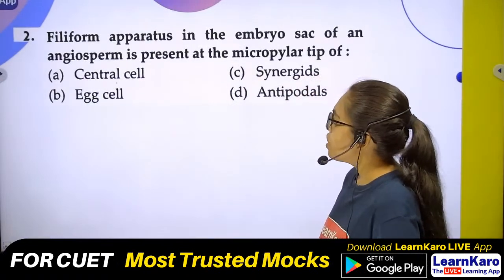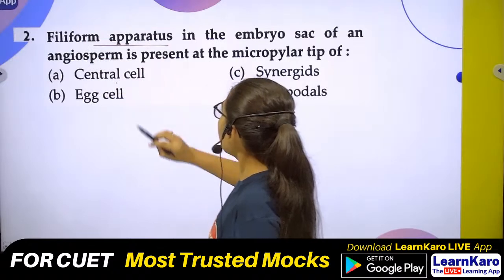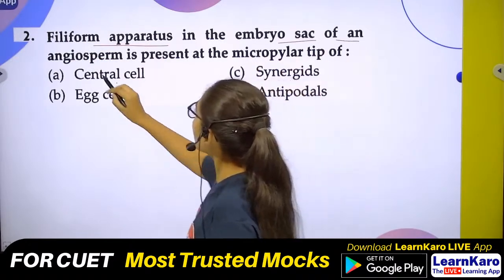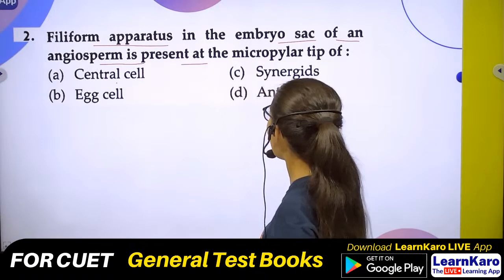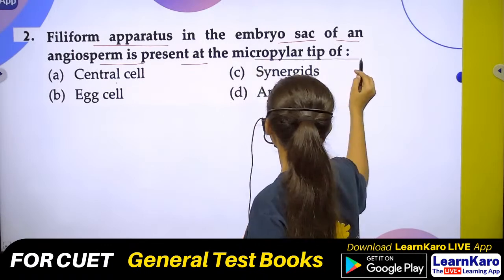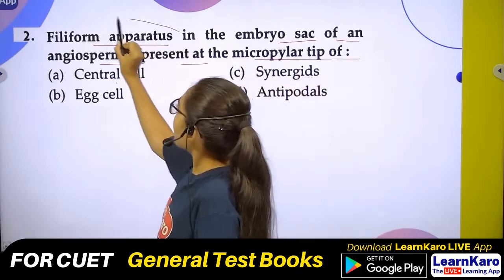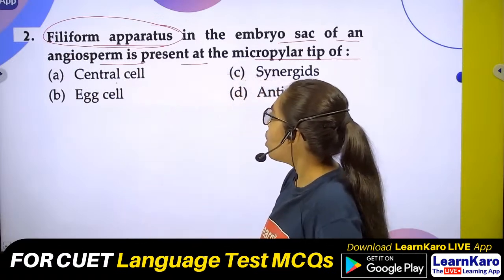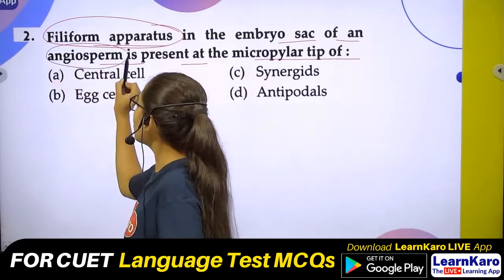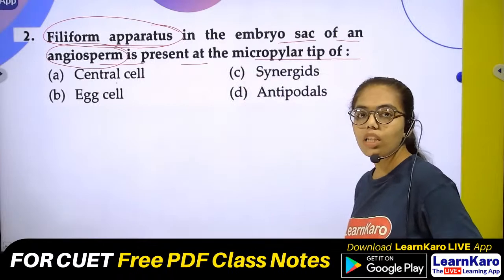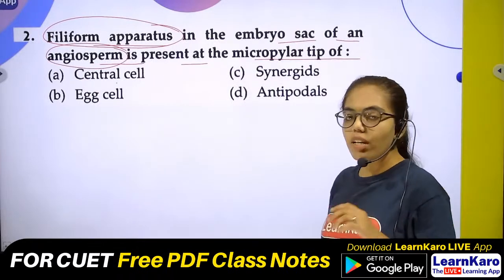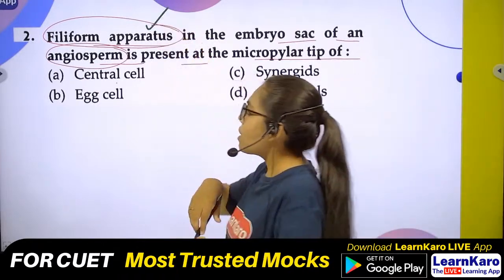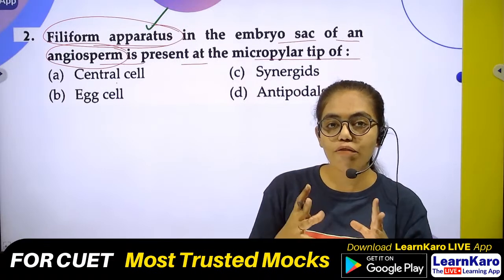Next question: The filiform apparatus in the embryo sac of an angiosperm is present at the micropylar tip. We are talking about the filiform apparatus in angiosperms — flowering plants. If you look in the embryo sac, there is a filiform apparatus.